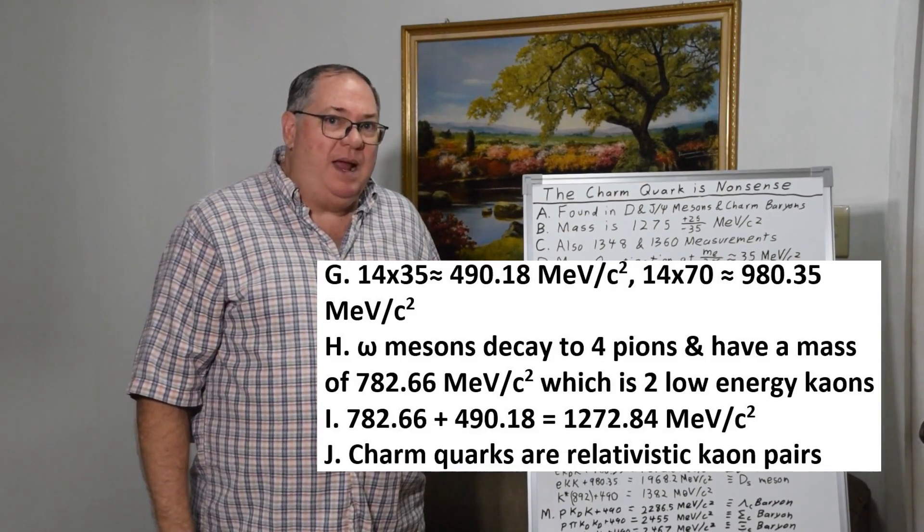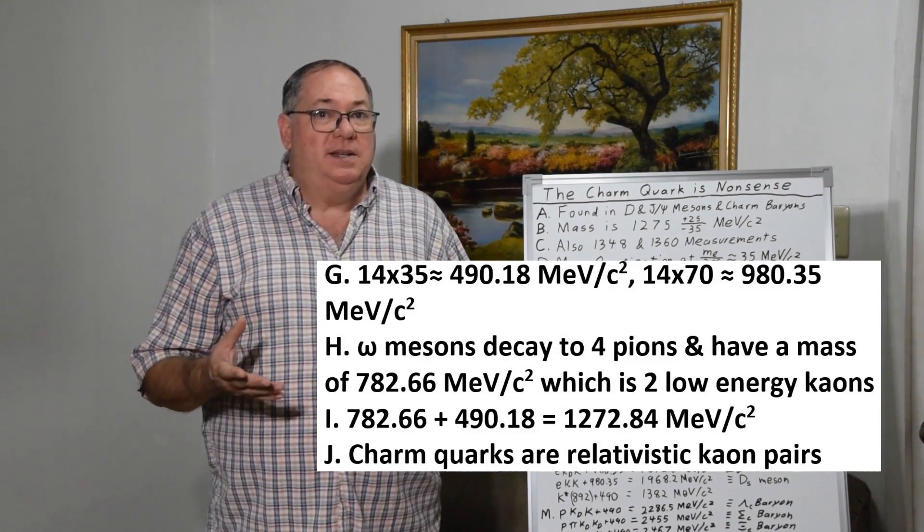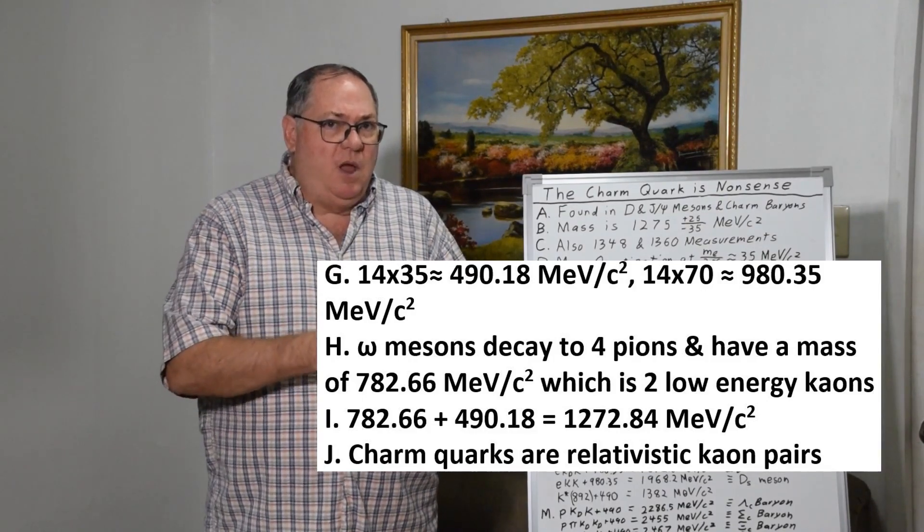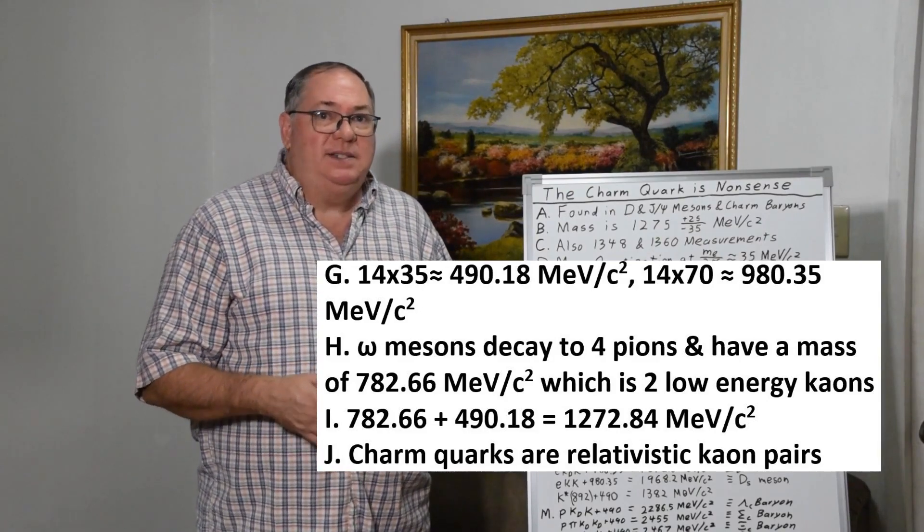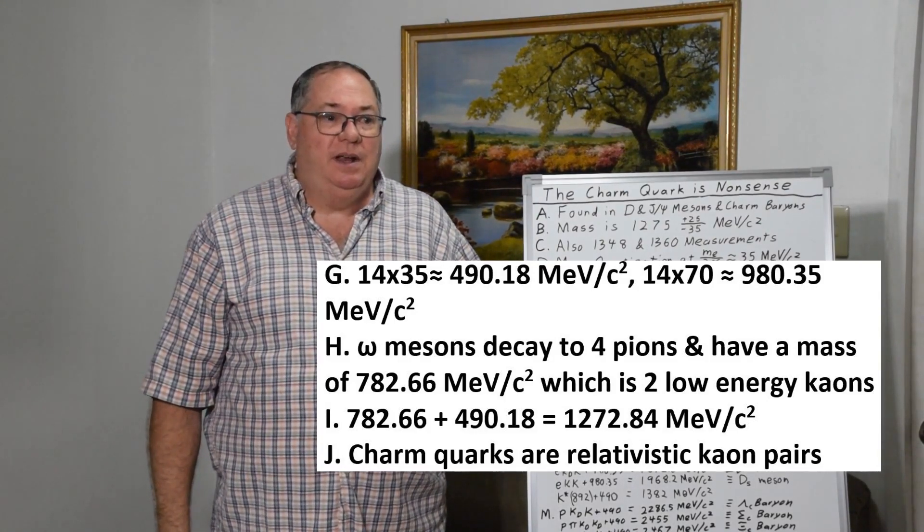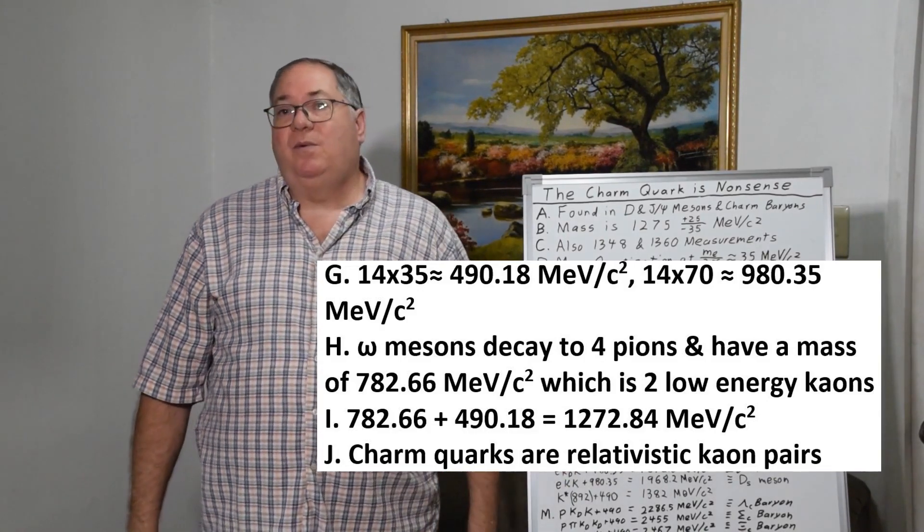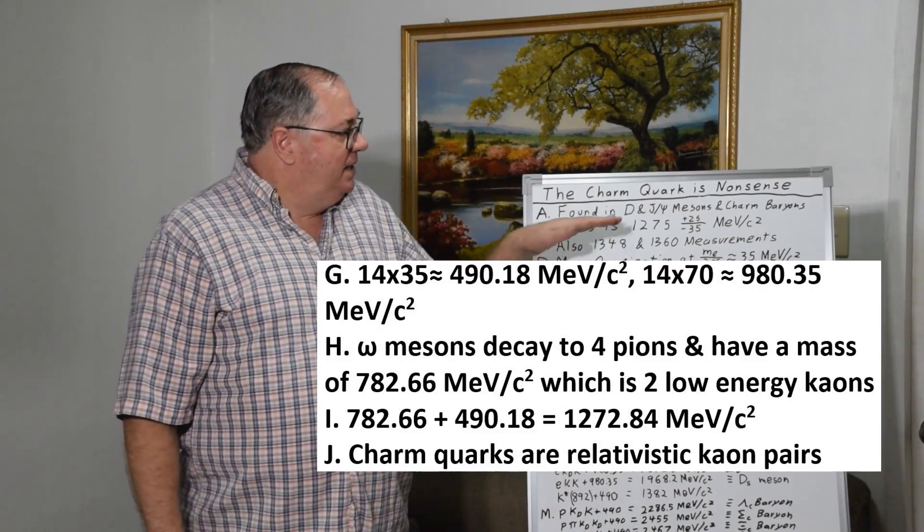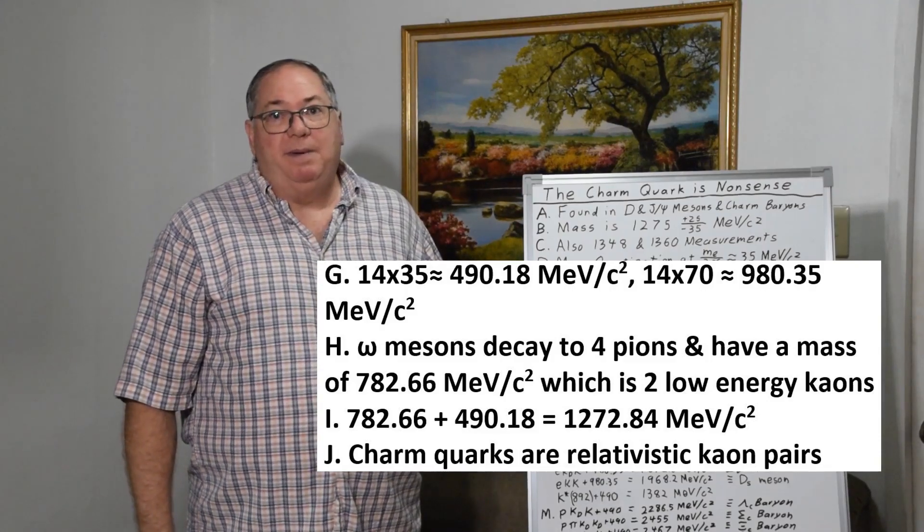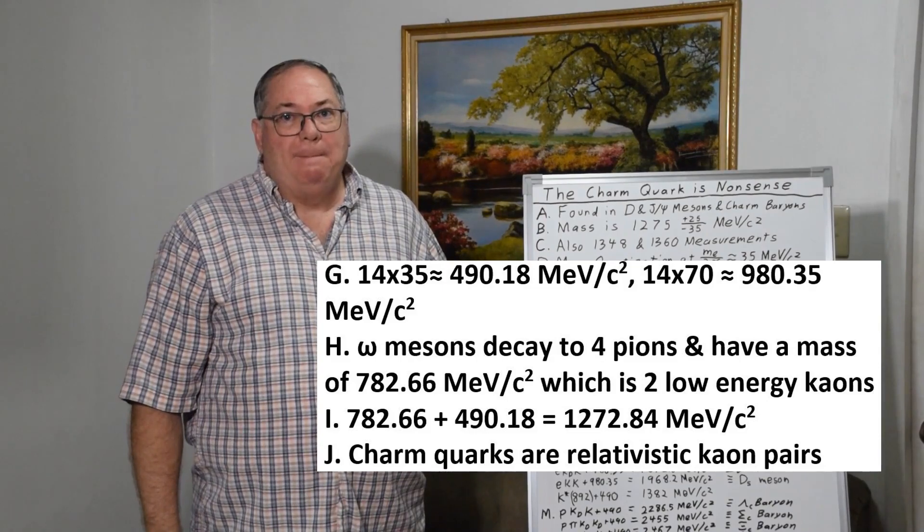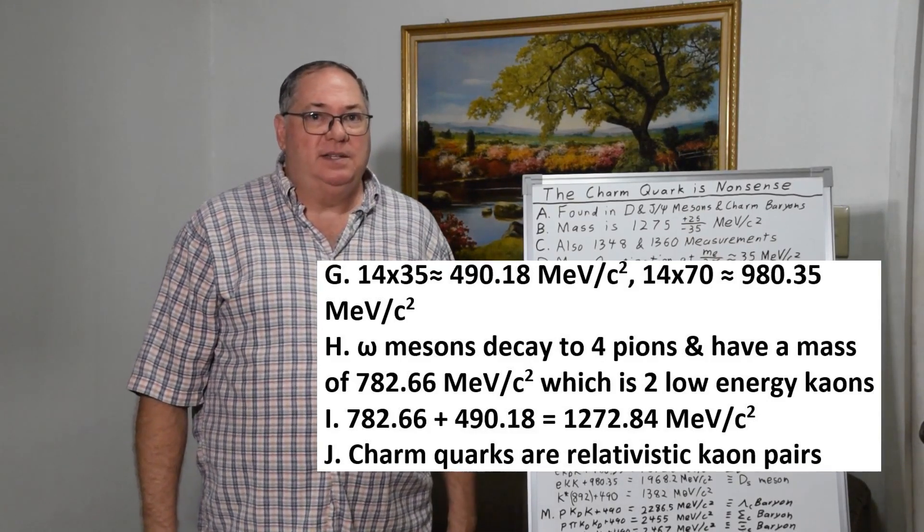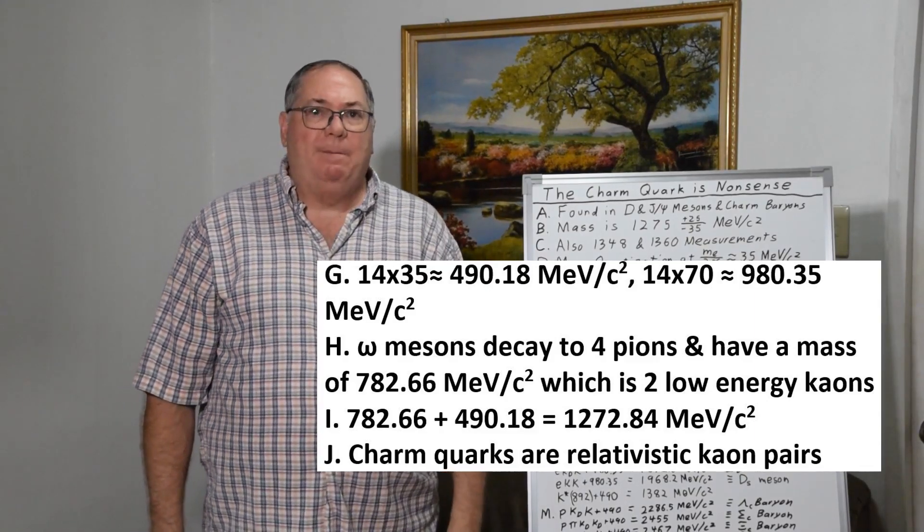And we can apply this real quickly and say, well, we know the omega decays to four pions, and so it looks like it contains two low energy kaons. And if we take the mass 782.66 MeV/c² and 490.18 MeV/c², we get a total of 1,272.84 MeV/c², which is the mass of the charm quark. So the charm quark is basically a relativistic omega meson. That's all it is. It's a pair of kaons that are orbiting relativistically and you get some additional energy.